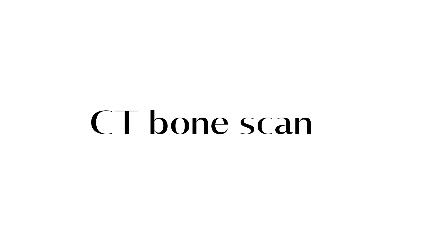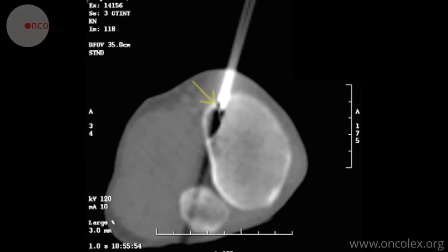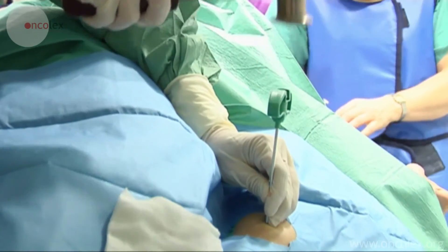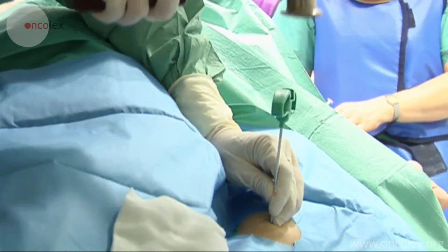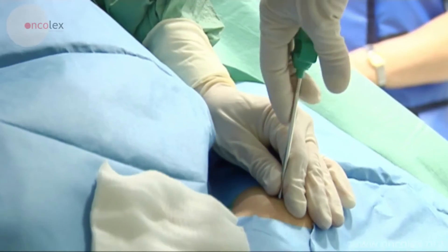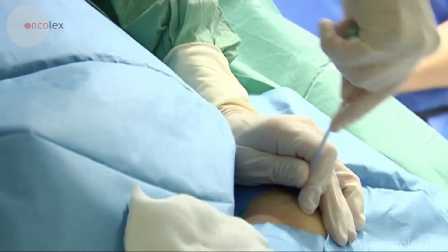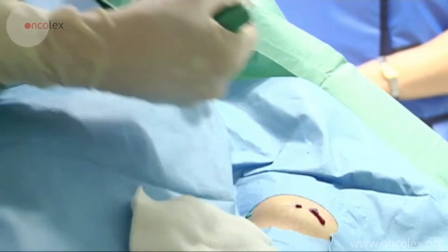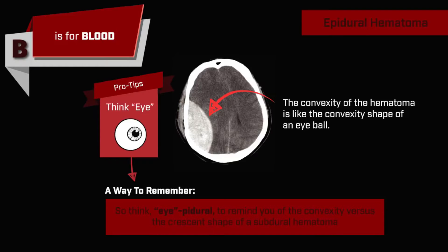CT bone scan: while an x-ray can detect a fracture or other bone problem, healthcare professionals also use a CT scan of the bones since it can give more detailed information. A doctor might order one if the results of a traditional x-ray are inconclusive. A CT bone scan will also provide a clearer picture of the soft tissues near the bones, such as tendons and muscles, and might also help diagnose cancer in the bones.